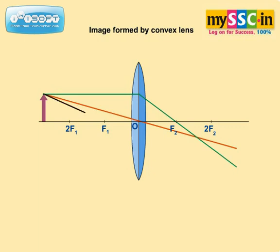Draw an incident ray passing through the first principal focus F1. After refraction, it is refracted in a direction parallel to the optical axis. The image is formed at the point where these three rays intersect.